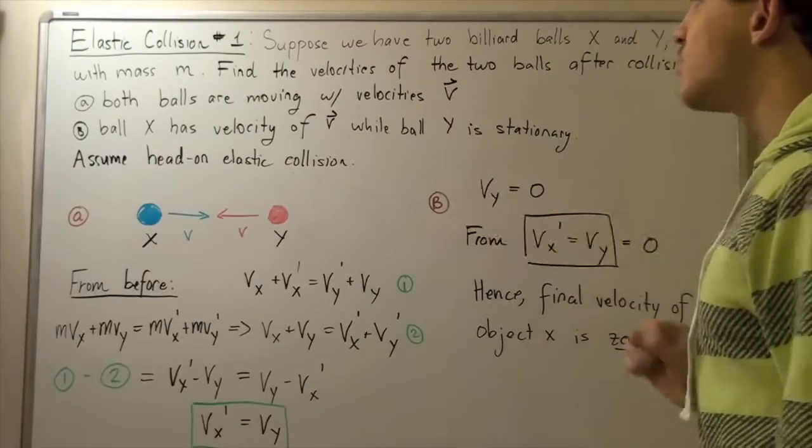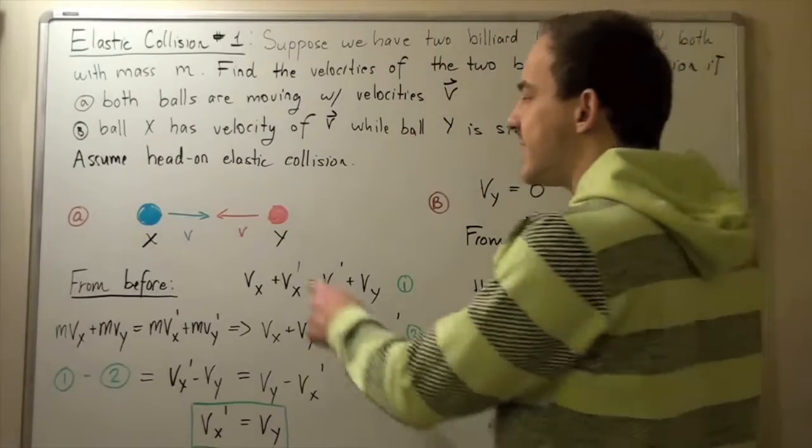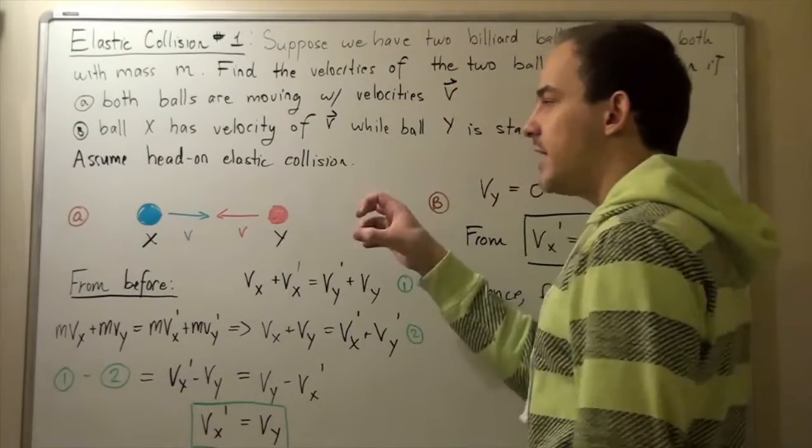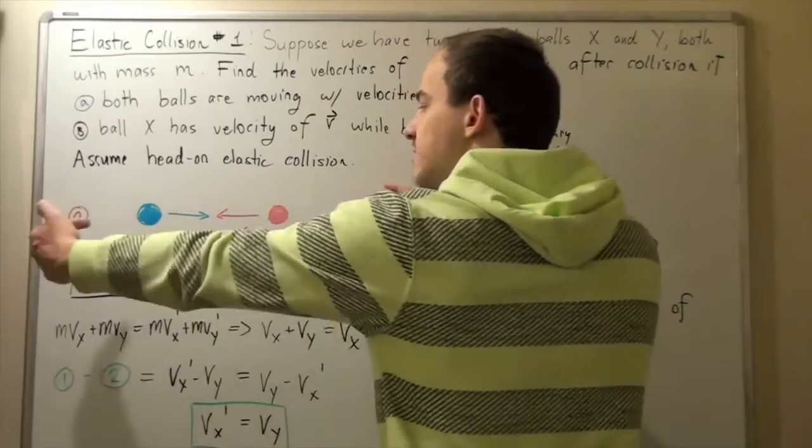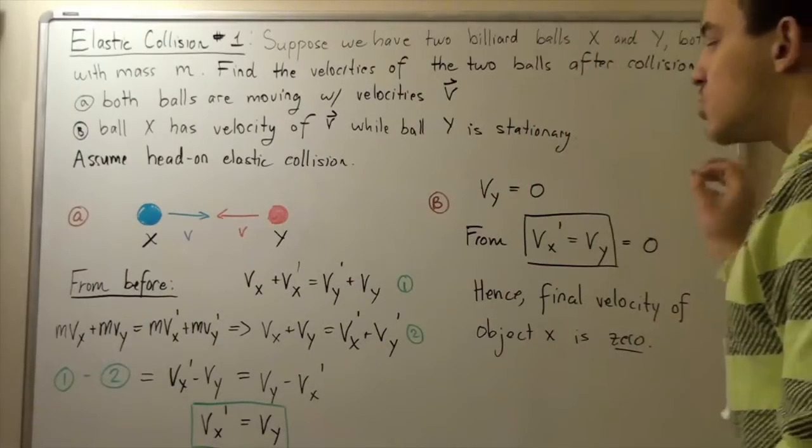Now let's go to part B. In part B, we want to find what happens if Y is stationary and X is moving in the positive direction with a velocity of v.